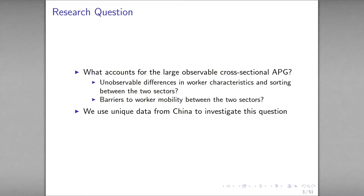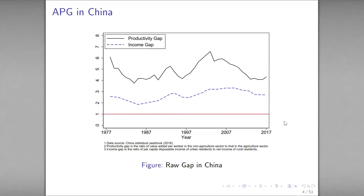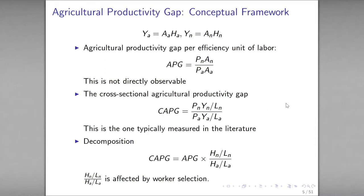In this paper, we use detailed microdata to tackle this question and investigate whether the agricultural productivity gap in China is a result of barriers to labor mobility or the sorting of workers based on unobserved characteristics. China provides an excellent case study because there exist substantial migration barriers that restrict rural-urban migration. This figure presents the raw agricultural productivity gap in the black line and the raw agricultural income gap in the blue line. You can see that both gaps have been quite pronounced over the last 40 years. Thus, the observable cross-sectional income gap represents the underlying productivity gap that is important for policy consideration.